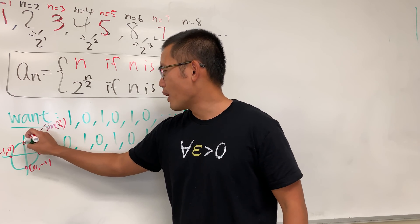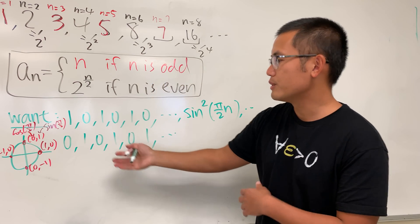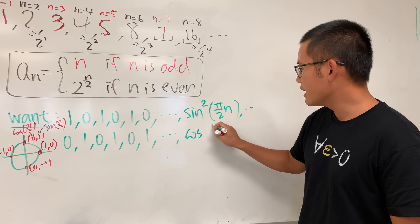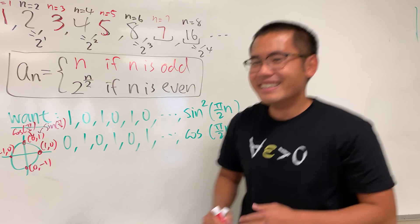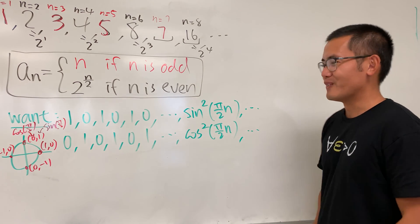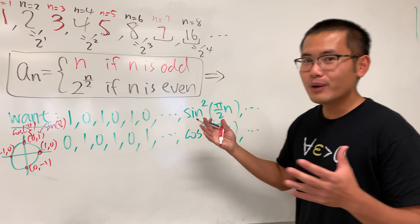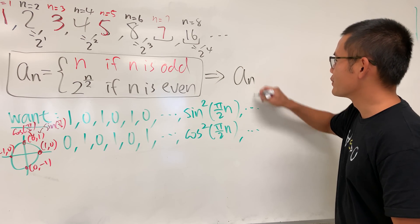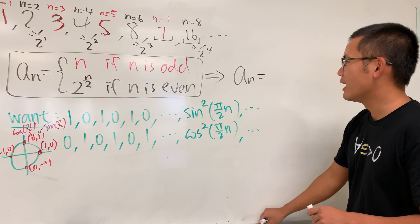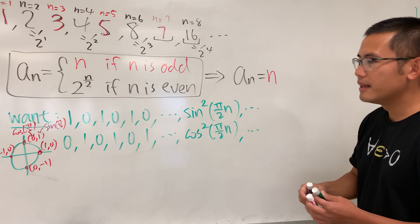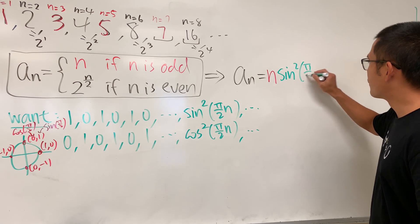Similarly for the 0, 1, 0, 1 sequence, we look at cosine(π/2), which begins with 0 and goes around the circle. This gives cosine(πn/2), and we apply the same squaring: cos²(πn/2). One of my favorite questions. So now let me show you the final answer. To merge the two formulas, all you do is multiply each part by its corresponding selector.